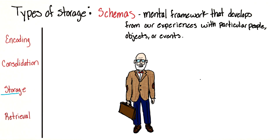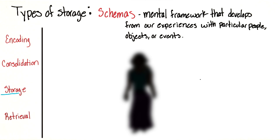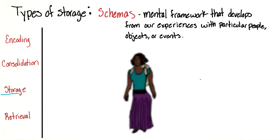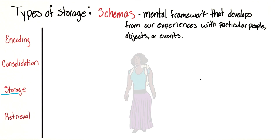So if that's a person's schema for a professor, research shows that if he or she is presented with new information that is contradictory to that schema — for example, it being a young woman who dresses rather casually, carrying a backpack rather than a briefcase — the person with the developed schema would be less likely to remember the female professor. So schemas can aid in our ability to remember, but they also bias our memory and our perception.